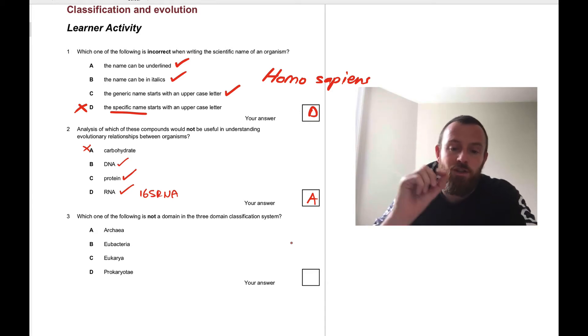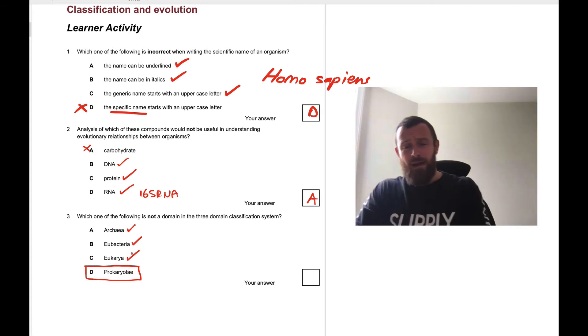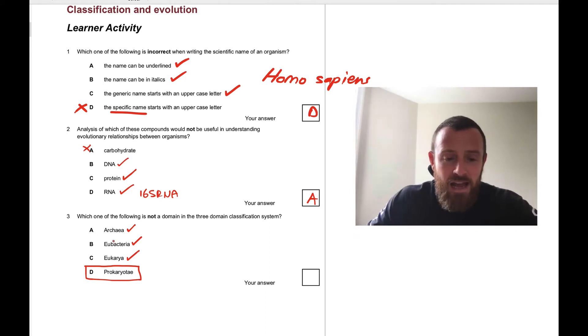Which one of the following is not a domain in the three domain classification system? I've made a mistake in this in the past so I remember now. Archaea is, Eubacteria is, and Eukaryote is as well. It's prokaryotes that isn't. There was an earlier system called the two domain system that was basically prokaryotes and eukaryotes. But now actually we split prokaryotes into these two. Prokaryotes contain Archaea and Eubacteria, and they're very distinct microorganism families. So the answer is B.